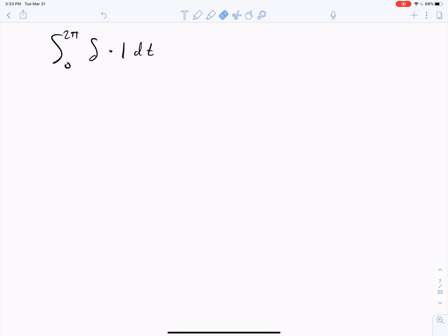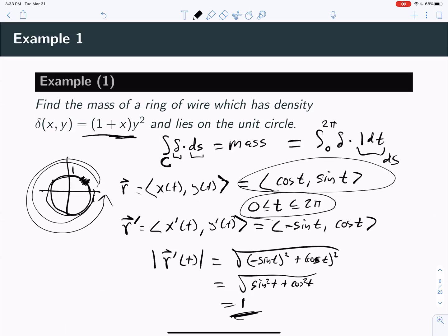Now if δ was 1, then we would just get 2π, which would just be the circumference of that circle. But δ is not 1.